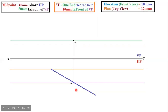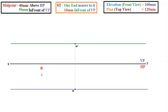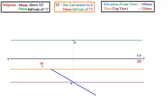The next step: point S is 10 mm in front of VP. So from the reference line, draw a line at 10 mm. We don't know exactly where to place the S point, but we have a hint. The plan — that is, top view — is 120 mm, so half of it will be 60 mm. Take your compass and measure 60 mm as your radius. Keep your compass at M and cut an arc on this 10 mm line.